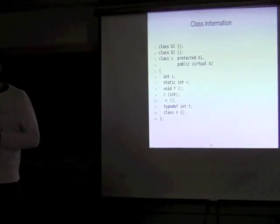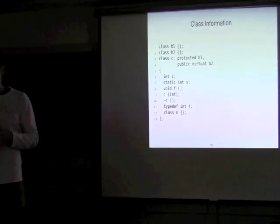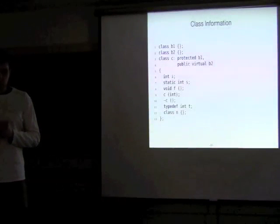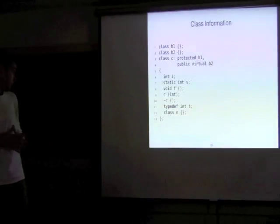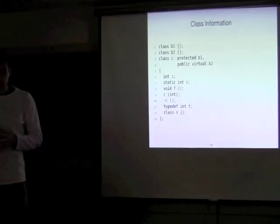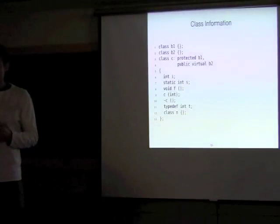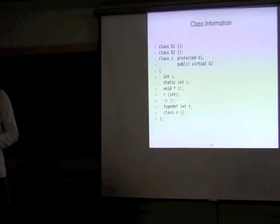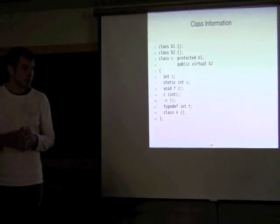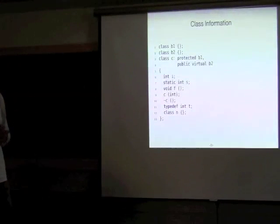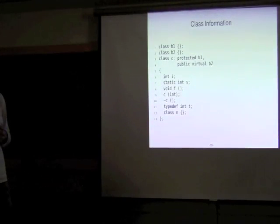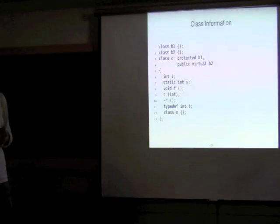I'm not going to show how to access all this information — it's very similar to what we've already seen. Instead, I'll show a sample C++ class that captures the main features and the output of a simple plugin which prints all this information. I'll also mention towards the end of the talk where you can get the source code for this plugin. It's a shared library which is loaded by GCC — all those macros are documented within GCC.